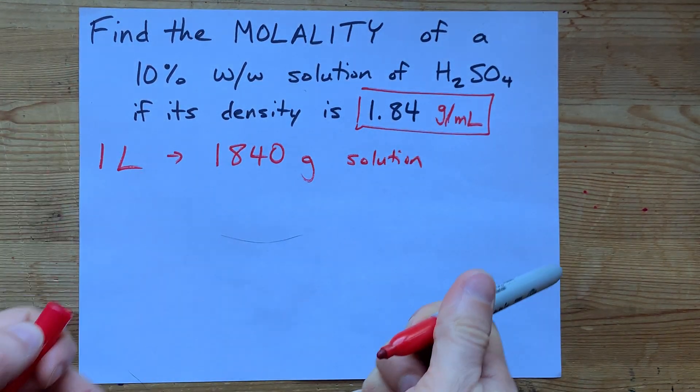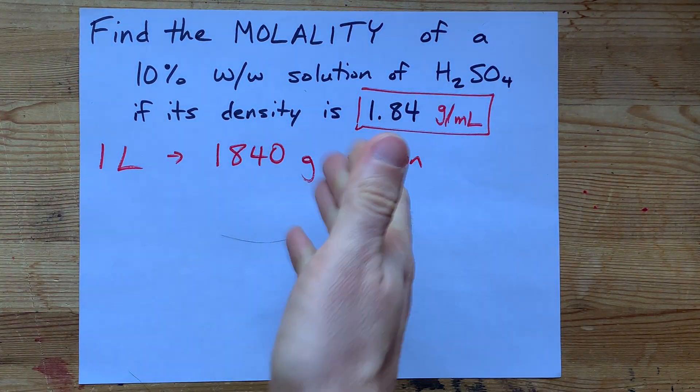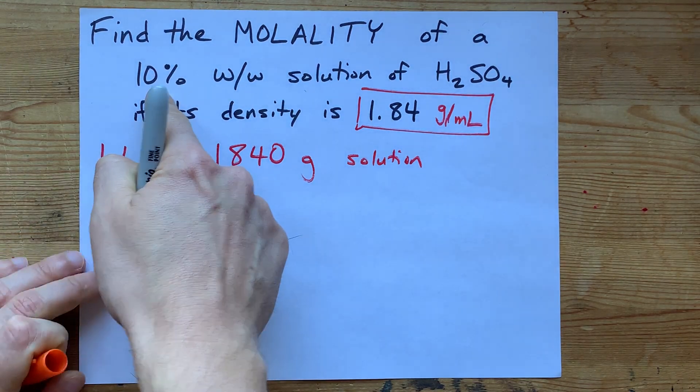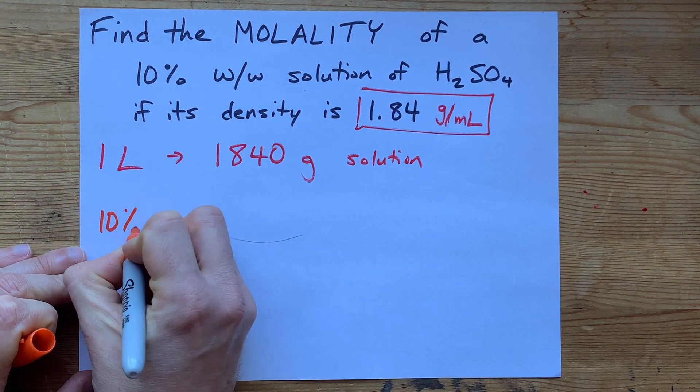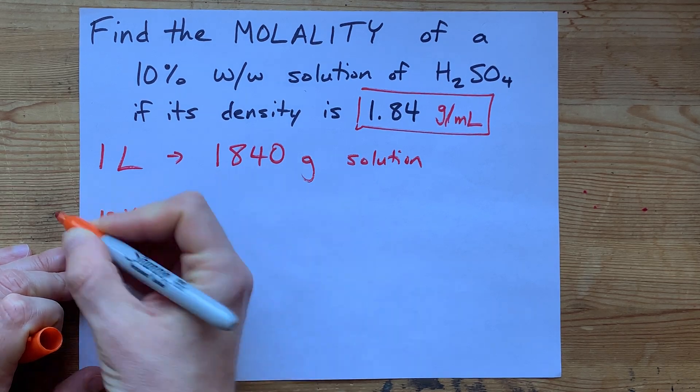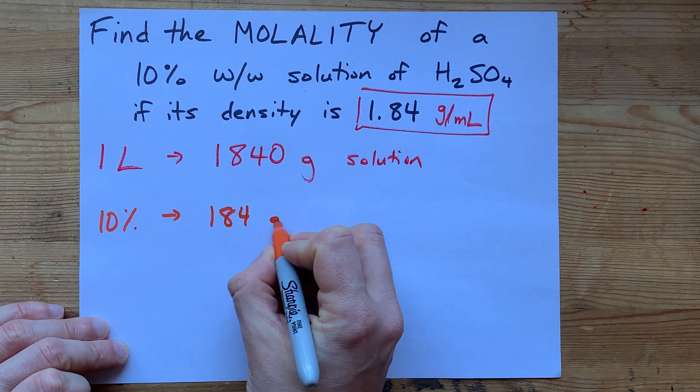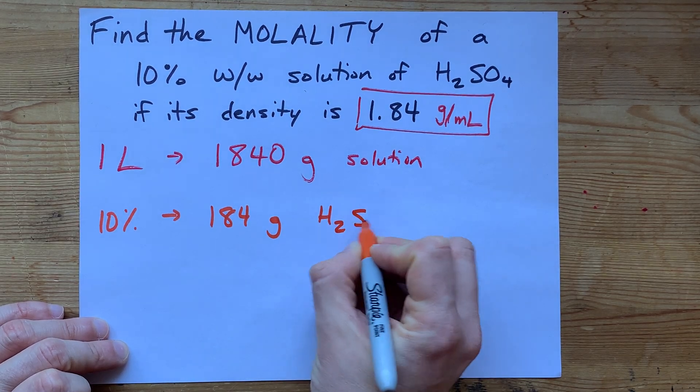That's the mixture of both H2SO4 and the water that it's dissolved in. Now, if it's 10% by weight, means that there's 10% of this amount, 184 grams of H2SO4.